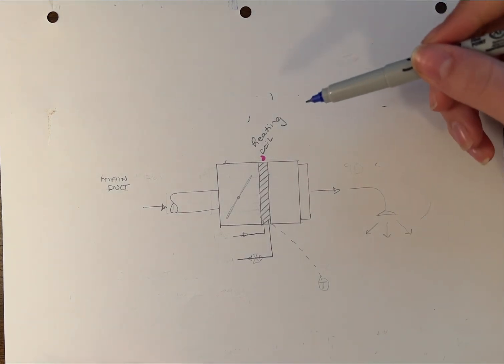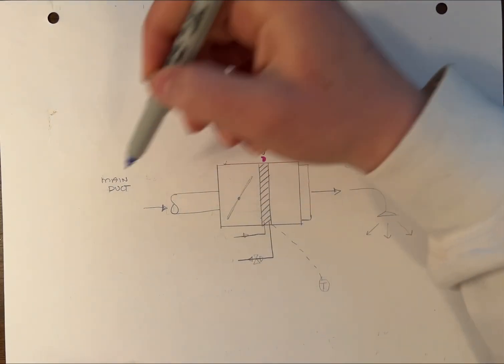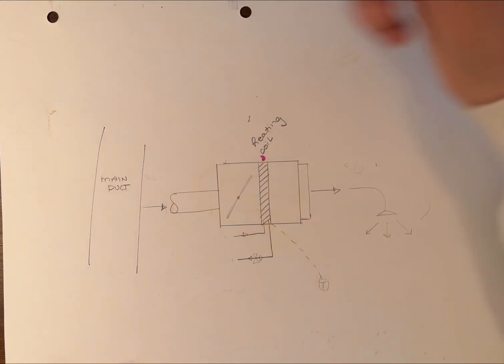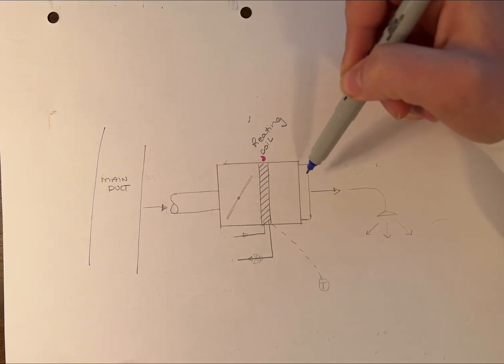A basic understanding of what a VAV box does: it gets main air from your main duct. Here's your main supply duct. It provides air into your terminal unit.